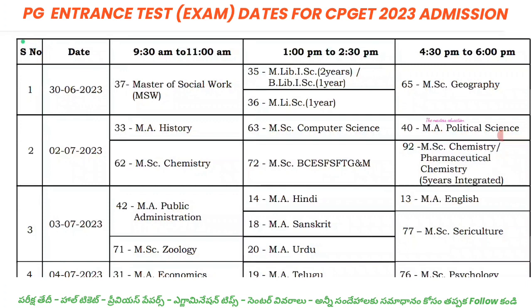In June 2023, Master of Social Work will be conducted as an online entrance test from 9:30am to 11:00am. Library Science will be conducted from 1:00pm to 2:30pm. Geography students will have their exam from 3:30pm to 6:00pm.